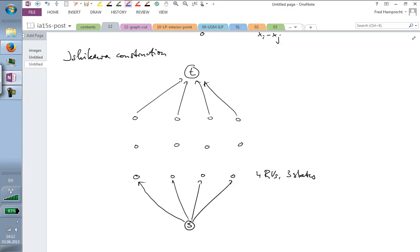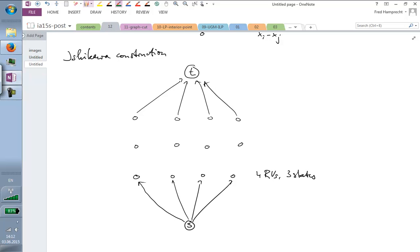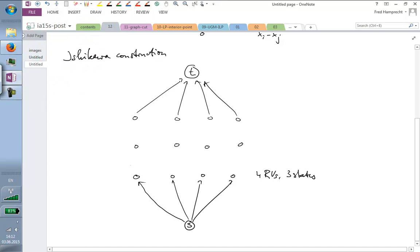And now we want to obtain a labeling which is given in terms of a cut in this space. So I can introduce a source node S and a sync or target T. And I'm now constructing a flow graph not unlike the one we've seen yesterday.